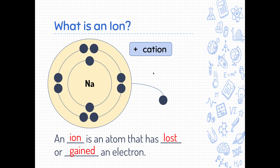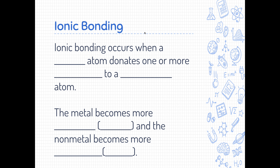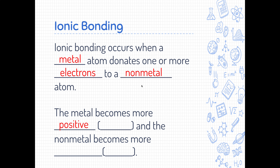So now, since sodium has lost a negative charge, it has become positive — it's called a cation. A cation is an ion with a positive charge. The opposite of a cation is an anion, which has a negative net charge. Ionic bonding occurs when a metal atom — any element to the left of the metalloid stair step — donates one or more electrons to a nonmetal atom. The metal will always become the cation, and the nonmetal will always gain the electrons, becoming an anion.